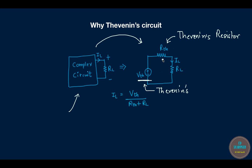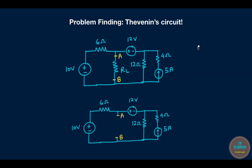In a nutshell, every complex circuit can be converted into a simplified circuit involving Vth, its internal resistance Rth, and a load resistance. Once you simplify the circuit, you have a function relating IL with Rth and Vth, so you don't have to worry about the changed value of RL — just put in the new value and you will get the new value of IL. Let's jump into the example to see how we can actually design a Thevenin circuit.